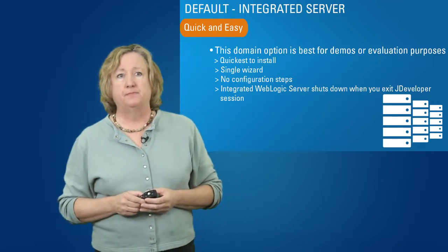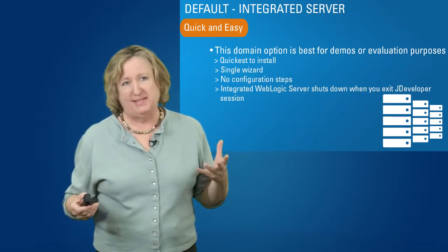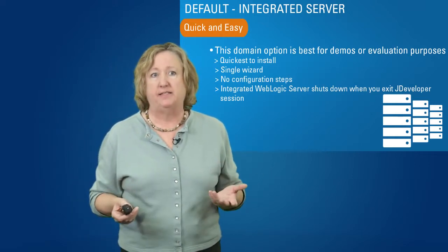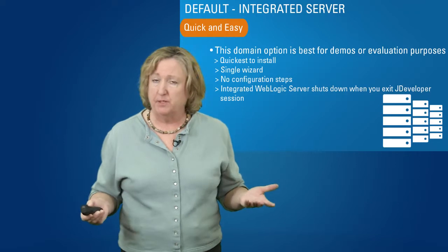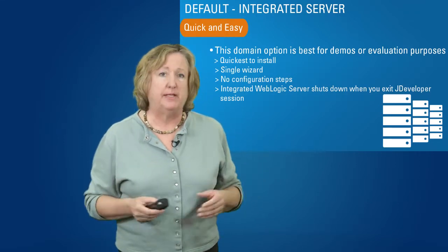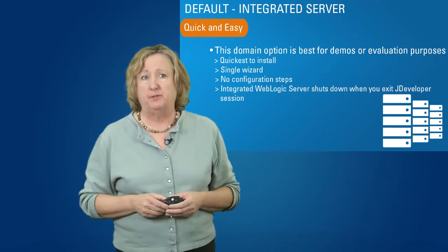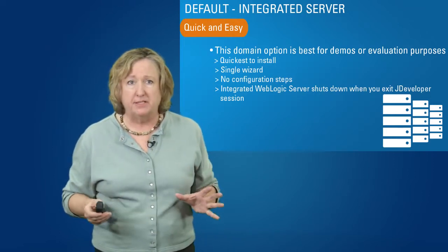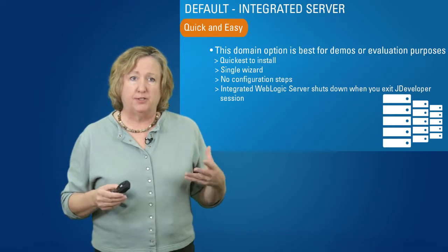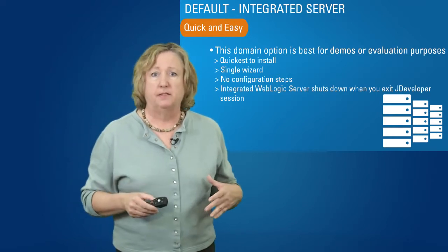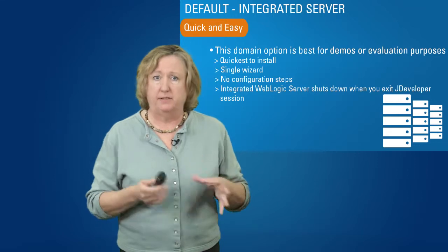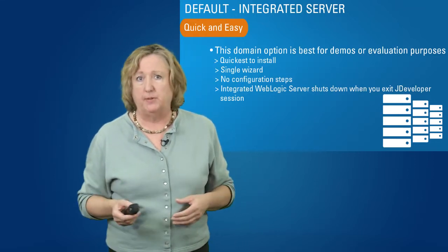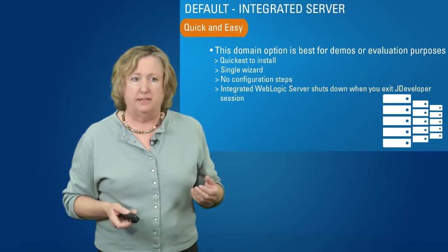Let's talk about the first one — the default. Its value is that it's quick and easy. It's very good for evaluation purposes because you don't have to know very much about anything. It's also convenient for demos: it's quick to install with a single wizard, there are no configuration steps at all, and the integrated server shuts down when you exit JDeveloper. They run together and go hand in hand, so demos and evaluations tend to be the correct use case.